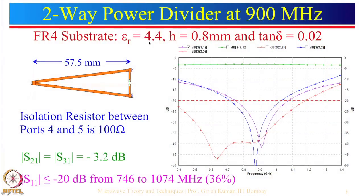We used epsilon_r = 4.4 (in reality epsilon_r can range from 4 to 4.6, so please check before using). The substrate thickness is 0.8 mm and tan delta is 0.02. Note that FR4 substrates can have tan delta varying from 0.01 to 0.025. This simulation was done using IE3D software.